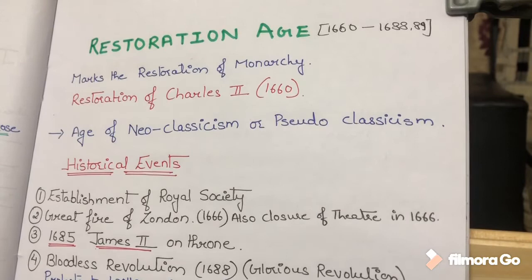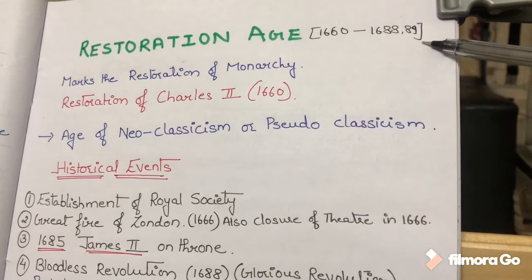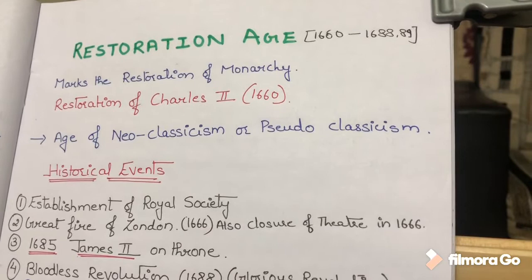Hello everyone and welcome to my channel Easy English Literature. Today we will discuss the Restoration Age. This age began in 1660 and lasted up to 1688-89 approximately. This age marks the Restoration of Monarchy.